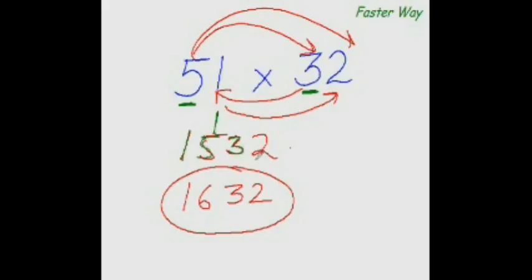For the last digit, all I need to do is multiply the last digits of these two numbers. So 1 times 2 is 2 — I put down 2 here. As simple as that. 15 plus 1 is 16, and 32 — that is the answer.